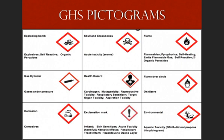OSHA has jurisdiction over and will enforce the use of all of these GHS pictograms except the environmental pictogram located in the bottom right-hand corner, which pertains to environmental aquatic toxicity. Before getting into a brief description of what each pictogram represents, let's first discuss what a pictogram is.